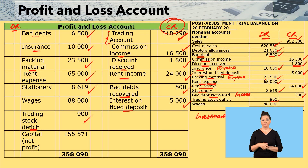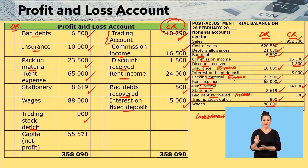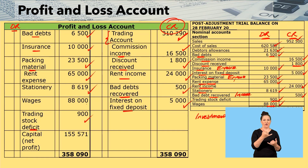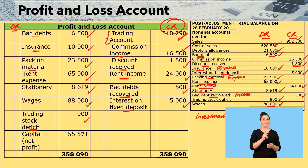The last one is wages. Wages are an expense, so you come and debit your wages in the profit and loss account — wages $88,000.